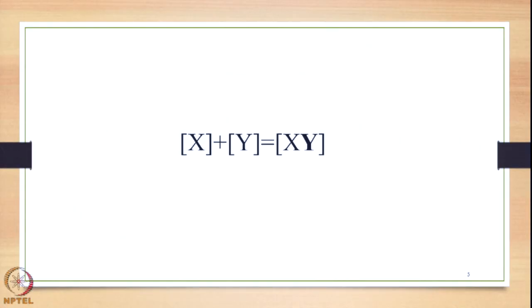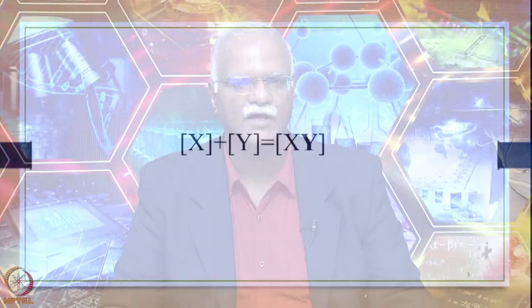The derivation of the Tatpurusha Samasa can be shown in simple form. We have X and Y — two independent and separate units in terms of meaning, word form, and accent. But they are interrelated, so the speaker of Sanskrit decides to merge them together and generate an output with only one entity. XY is that output — one entity in terms of meaning, word form, and accent.